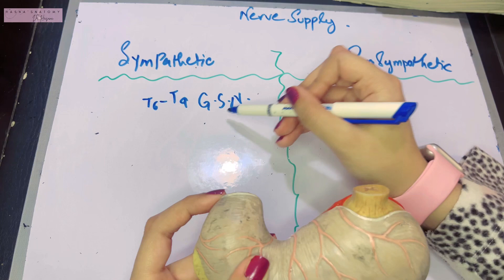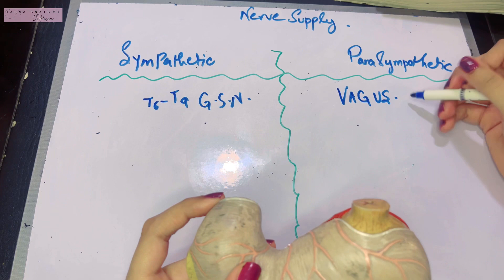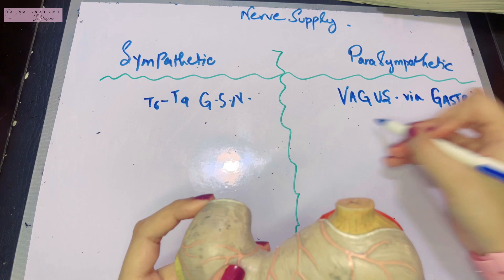Whereas the parasympathetic supply is derived from the vagus nerve, and vagal fibers come via the gastric nerves. The gastric nerves are divided into an anterior and a posterior gastric nerve.